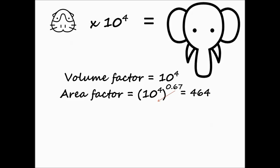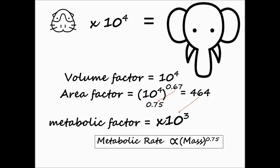Actual experimental data gives us a power exponent closer to 0.75. So the metabolic factor is not 464 but closer to a thousand. The 0.75 exponential relationship is called Kleiber's law and we got close to it with just our simple square cube law of scaling.